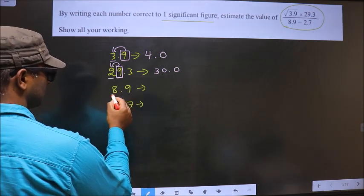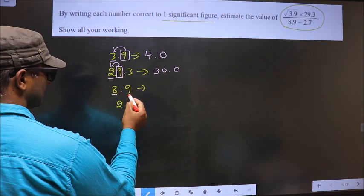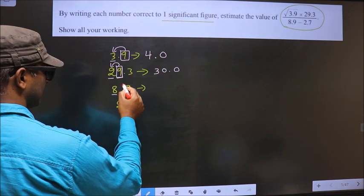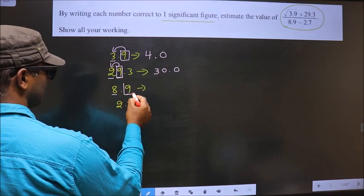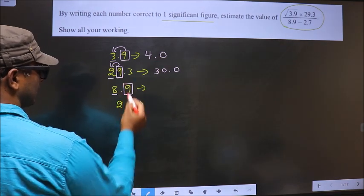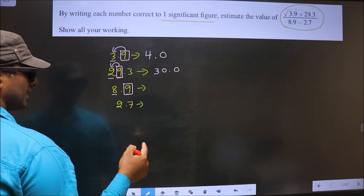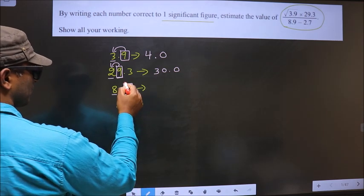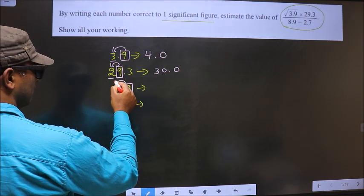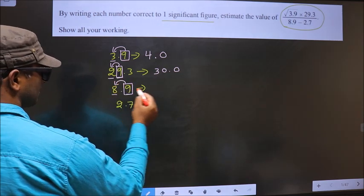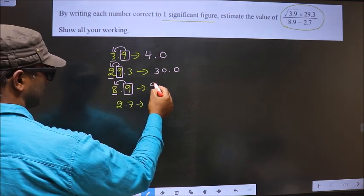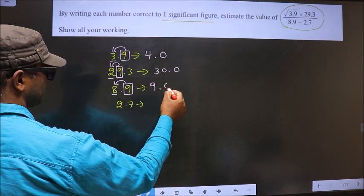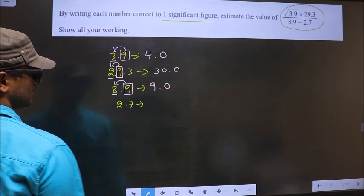Now, for this number, this is the first significant number. This is the second significant number, which is 9. 9 is greater than 5, so we should add 1 to this, making it 9. And in the rest of the places, you put 0.